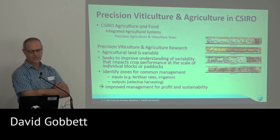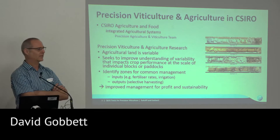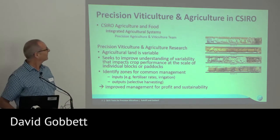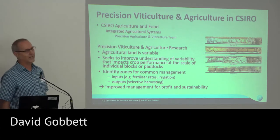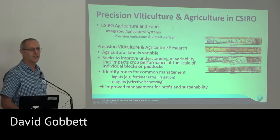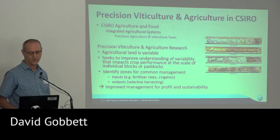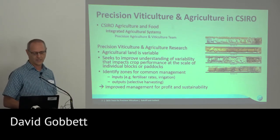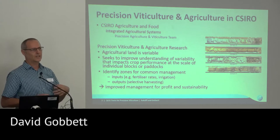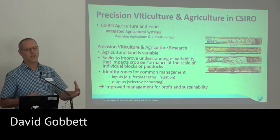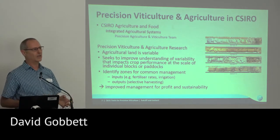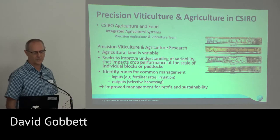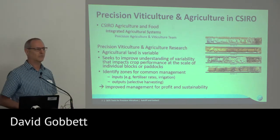So precision viticulture and agriculture — what is that? Under the assumption that land is variable, in any vineyard or paddock, yields and quality of the crop are not going to be the same. These soil samples are all taken from the same vineyard, showing variability in one of the key drivers that affects crop yield or quality. Our work is trying to understand the variability in the land at the scale of individual paddocks or blocks or vineyards, and using a better understanding of that variability we can provide assistance for people to manage their inputs — fertiliser or irrigation — or selectively target outputs, harvesting into different product streams. It comes down to improving management for profitability and sustainability.